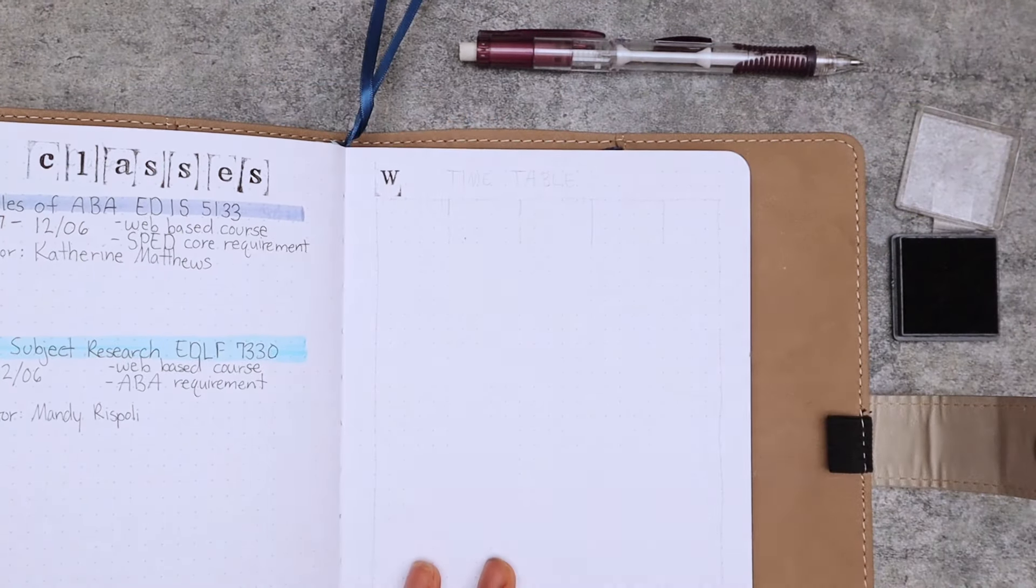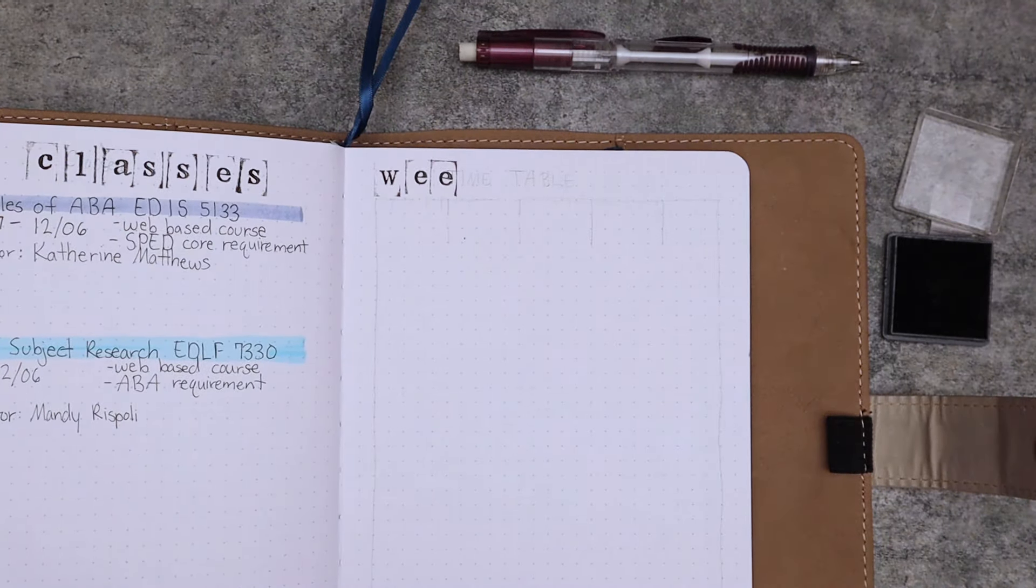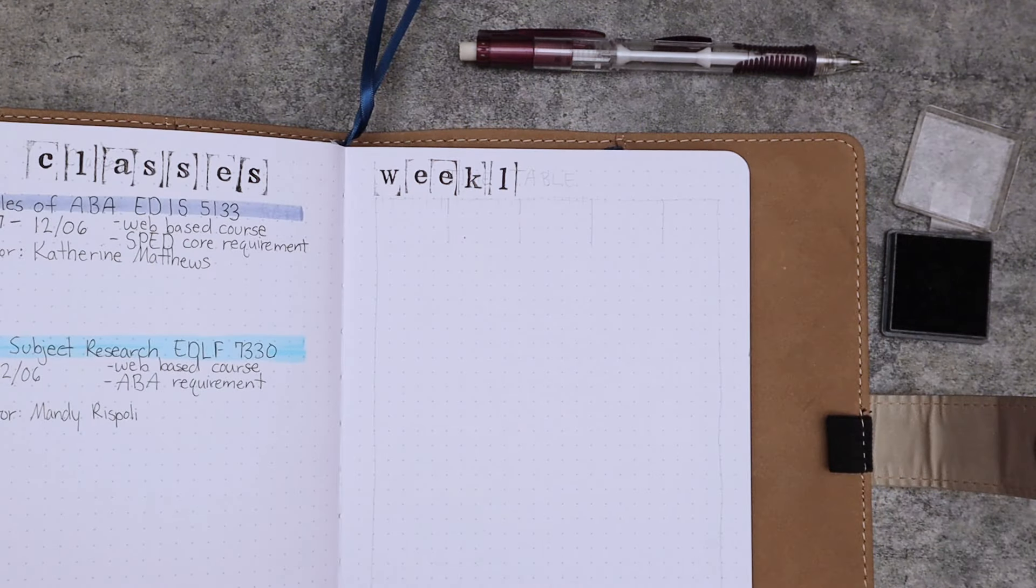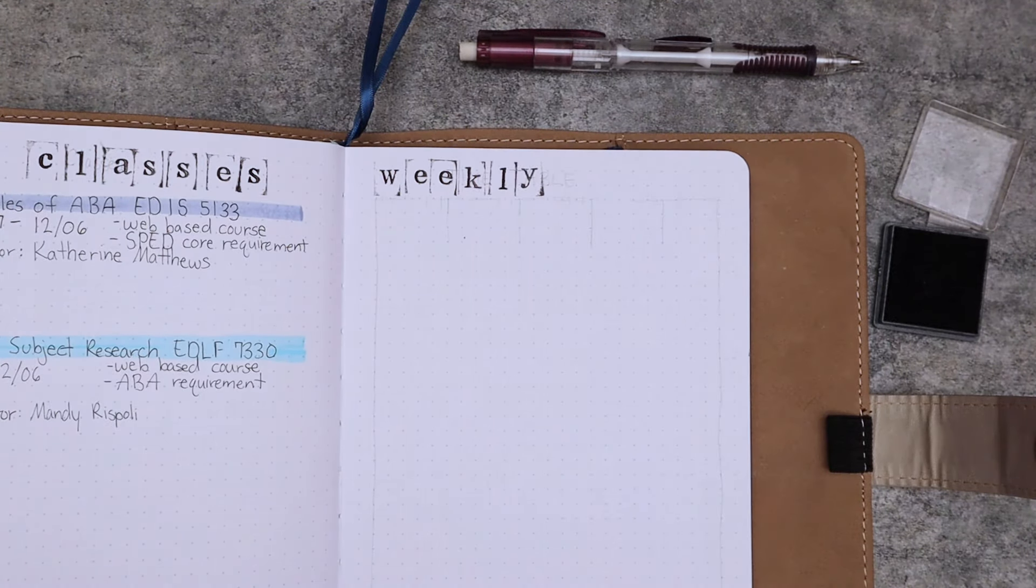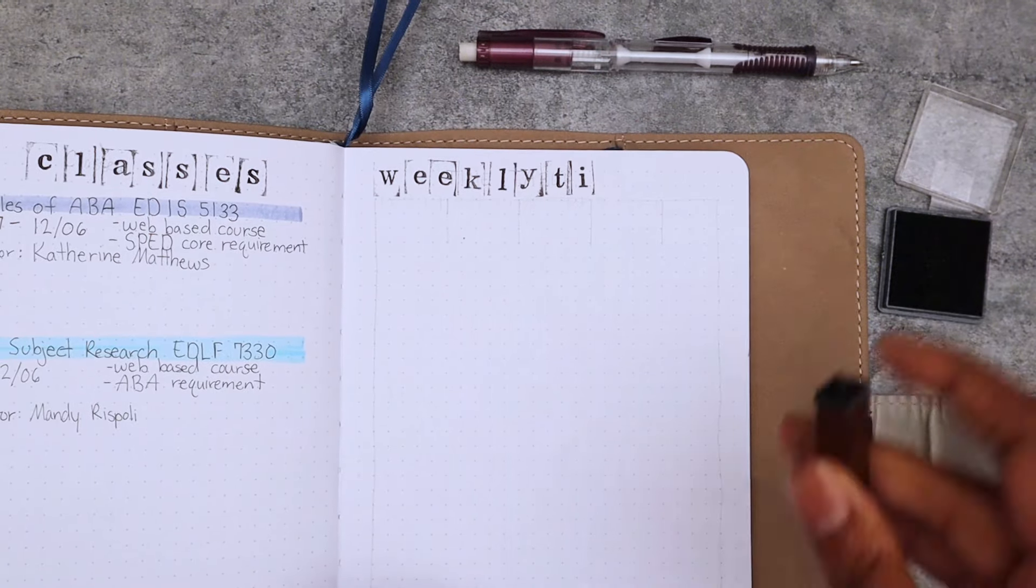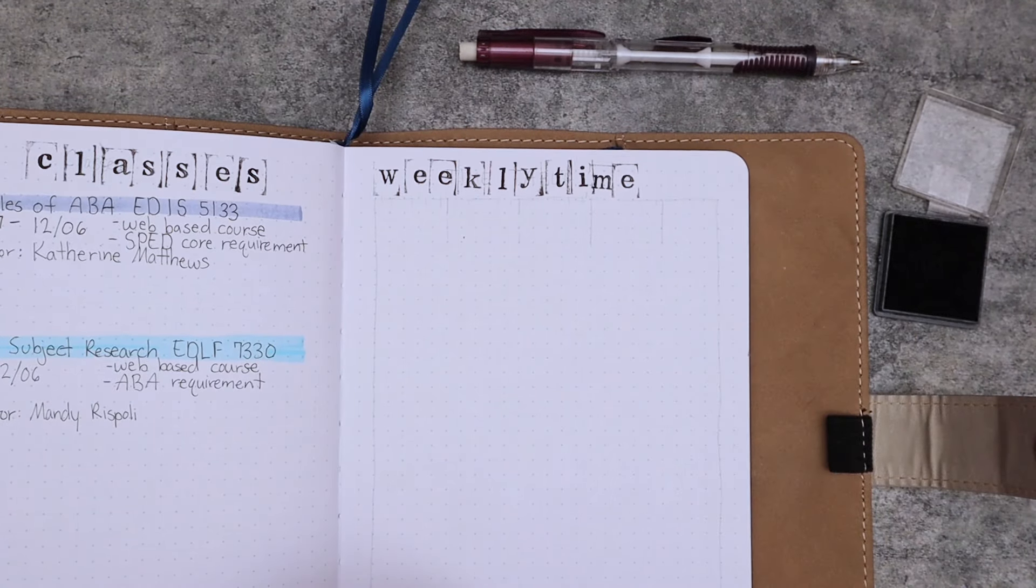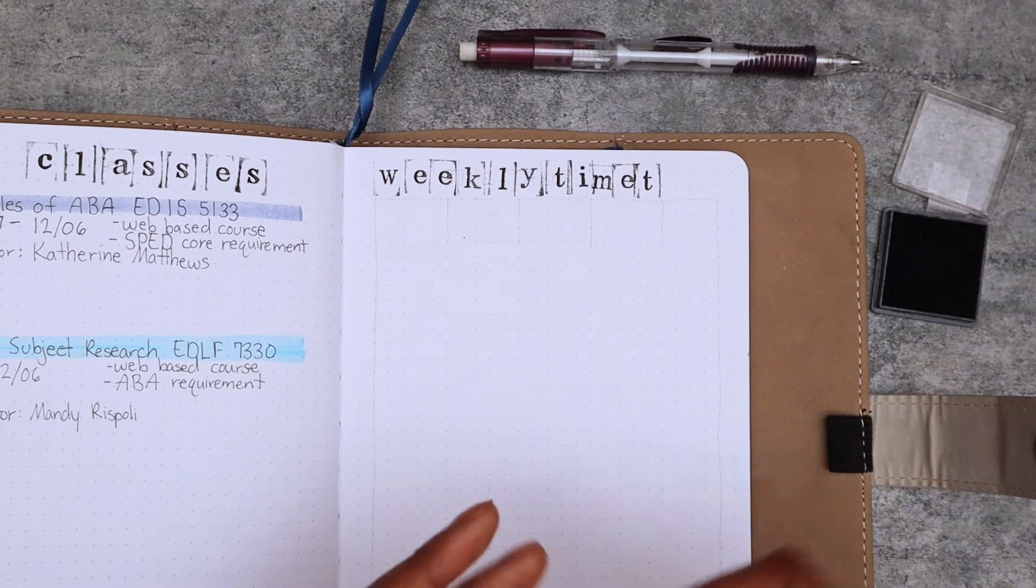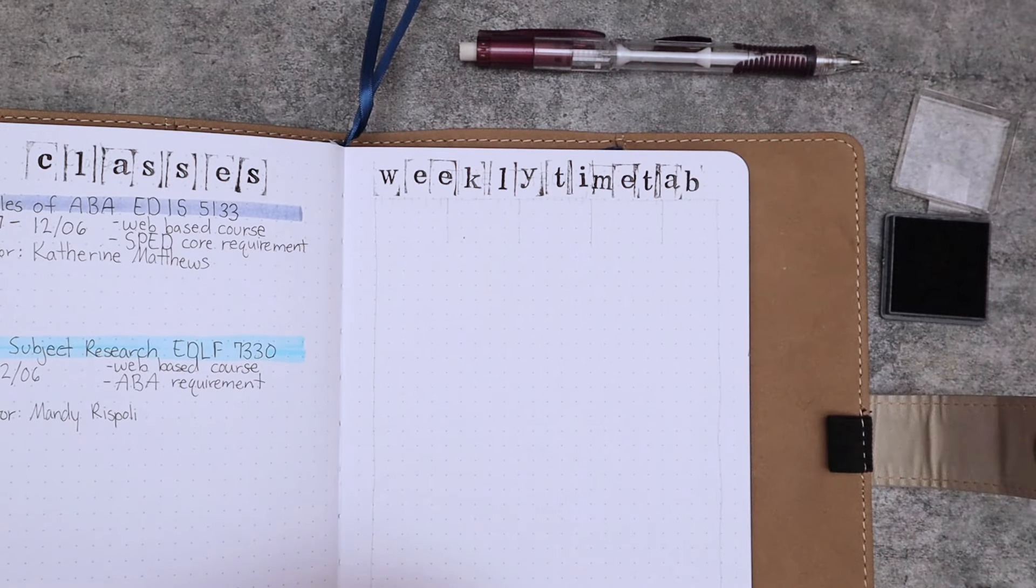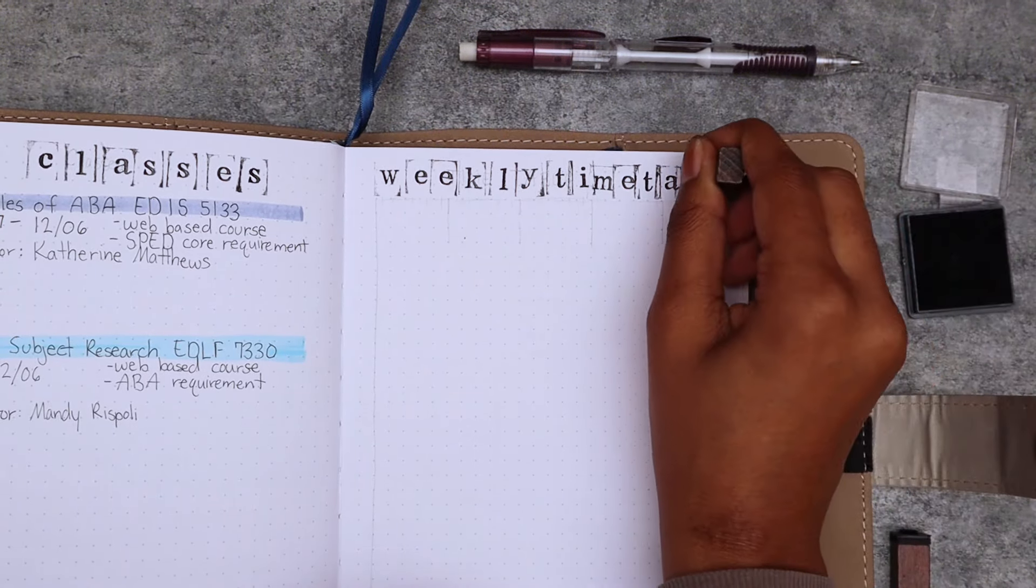Now moving on to the weekly timetable, which I'm so excited to implement in my bullet journal for the school year because this is literally how I see my week in my head. So to actually have it out on paper is just so nice, like I feel like I can exhale. Of course, again I'm using my famous stamps to write weekly timetable, and then I just did one big rectangle using my black Micron gel pen in the size 005. And with that big rectangle I separated it into five columns, so I didn't do the weekends and I'm gonna explain that in a little bit. But I just did Monday through Friday which are the times I will actually be having the courses, because my classes do not teach on the weekends, thank god.